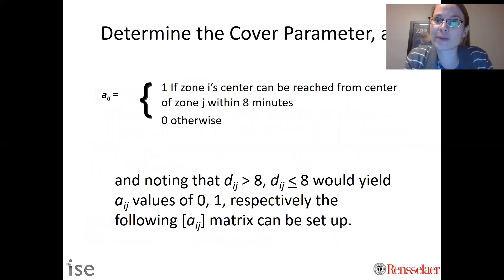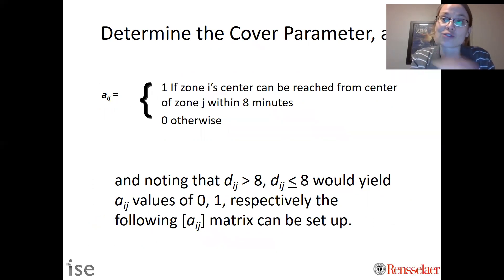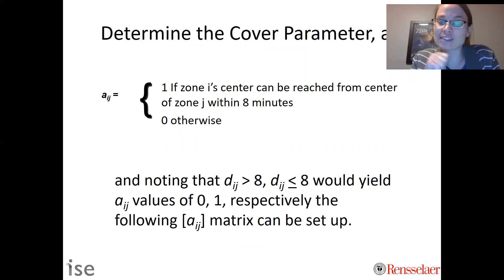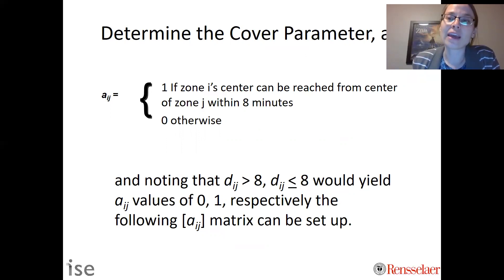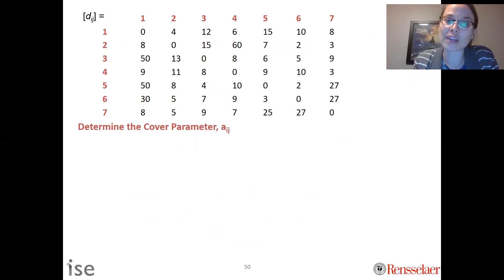First we need to determine the cover parameter. A_ij is a binary parameter: it equals one if zone i's center can be reached from the center of zone j within eight minutes, and zero otherwise. Given the distance data d_ij, if the distance between i and j is greater than eight minutes, A_ij equals zero; if it's less than or equal to eight minutes, A_ij equals one. We can then convert the d_ij matrix into the A_ij matrix.